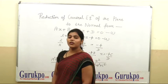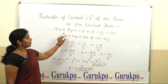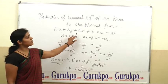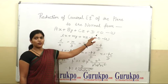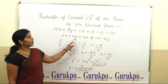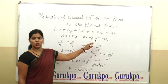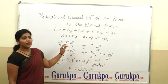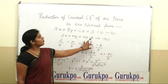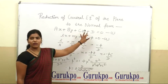First of all, the given general equation of the plane is Ax plus By plus Cz plus D equals to 0. And the normal form is Lx plus My plus Nz minus P is equal to 0. We have to find L, M, N and P in the form of A, B, C and D.